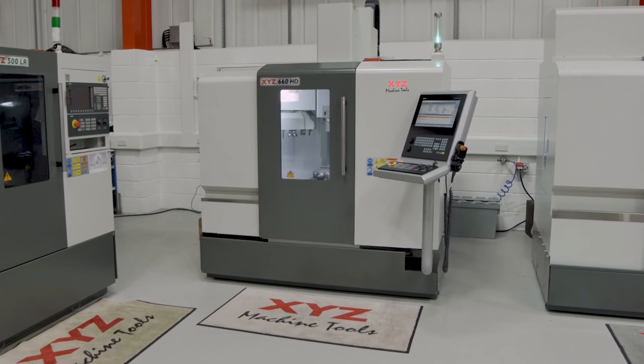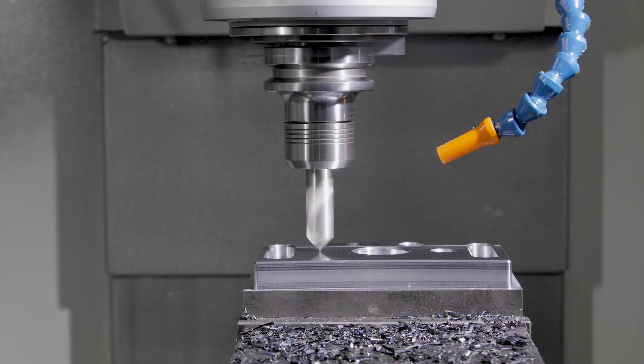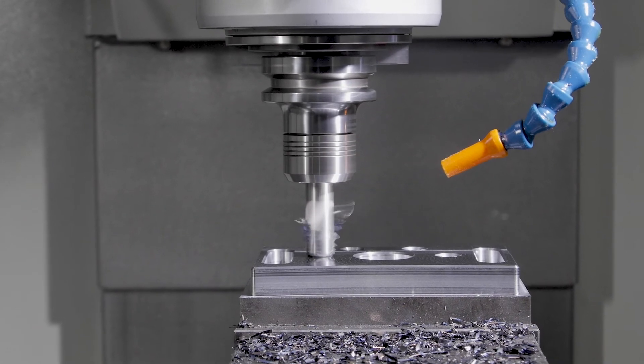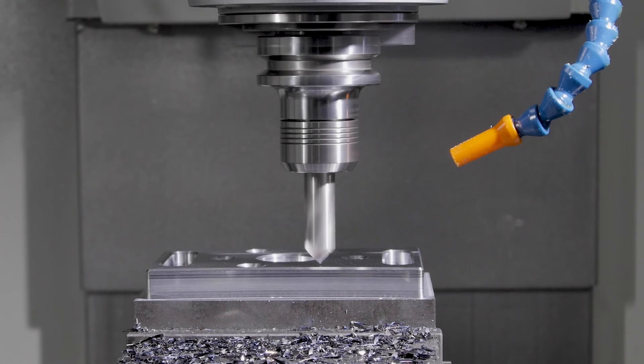Machine options include swarf conveyor, high pressure through-spindle coolant, 4th and 5th axis units, and machine part probing and automatic tool setting options from either Renishaw or Heidenhain.